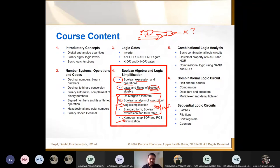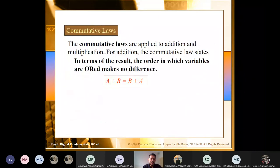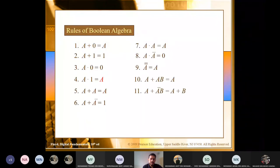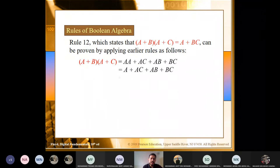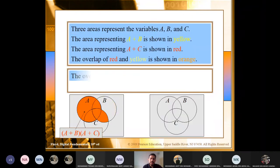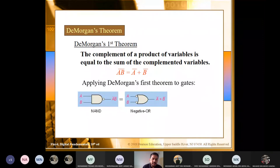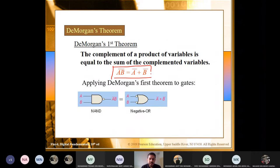Let's get to De Morgan's theorem and the laws that apply to Boolean algebra. The first theorem of De Morgan states that A·B bar equals A bar plus B bar. This is the first rule of De Morgan's theorem. You have learned in the previous tutorial that this is actually an equivalent circuit for the NAND gate as well as the negative OR gate.